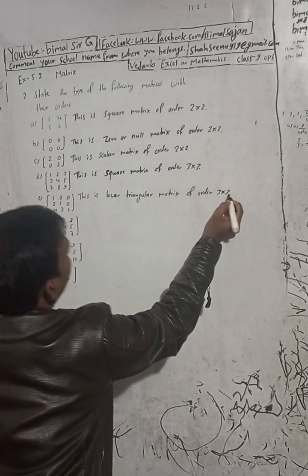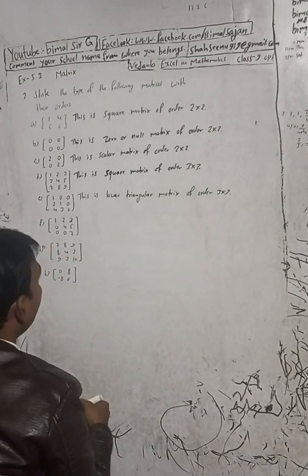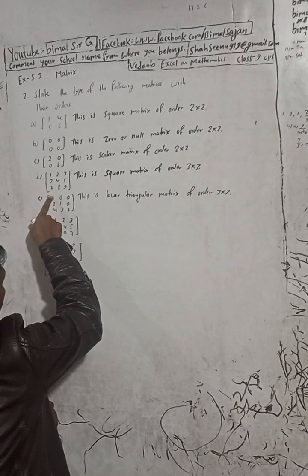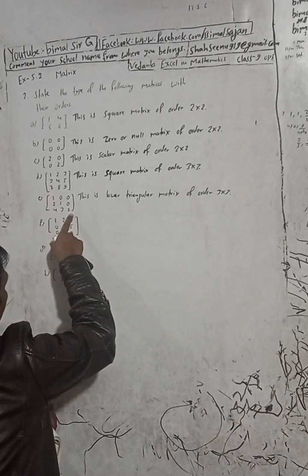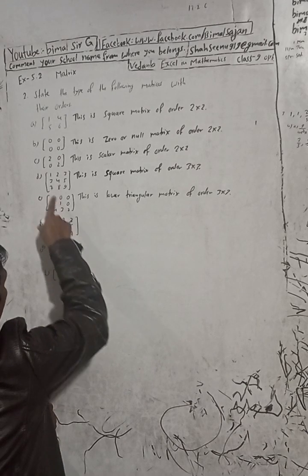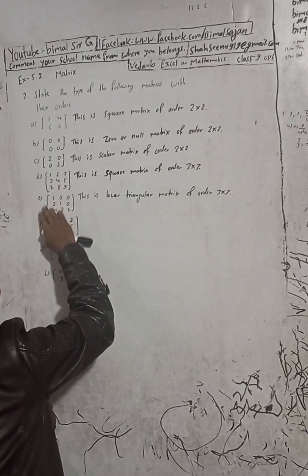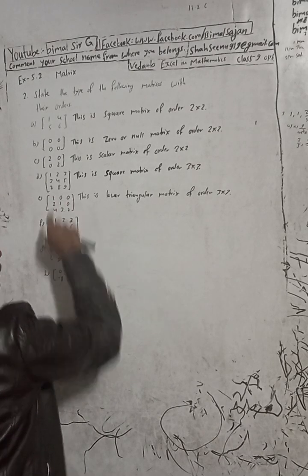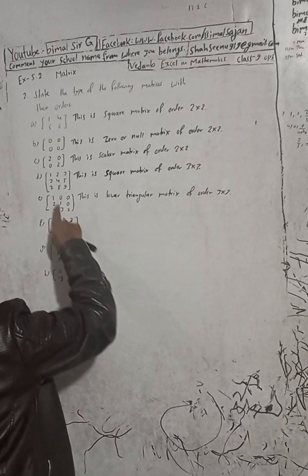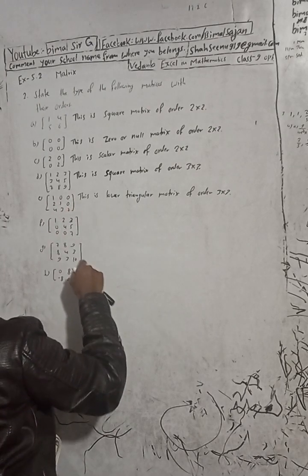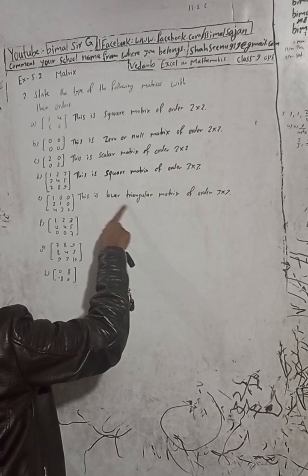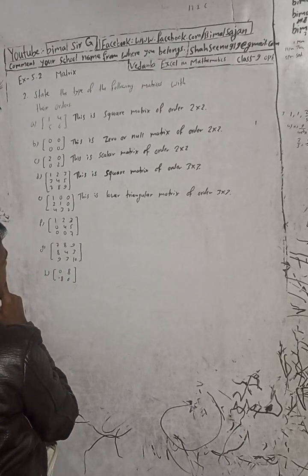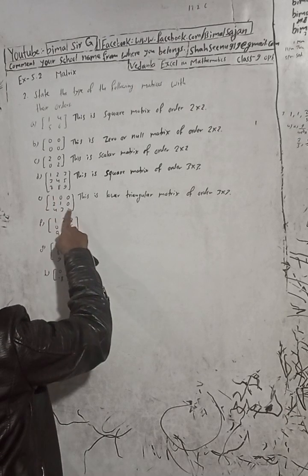This is a lower triangular matrix. The key property is that all the elements above the leading diagonal are zero. The leading diagonal goes from top-left to bottom-right. In a lower triangular matrix, the elements above the leading diagonal are 0.